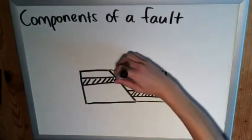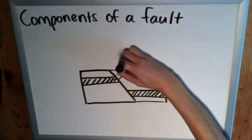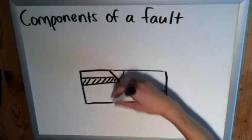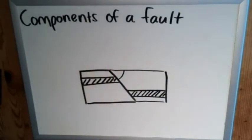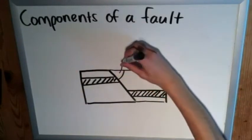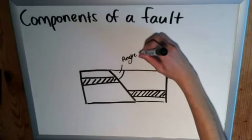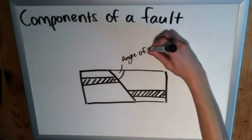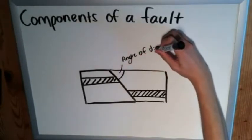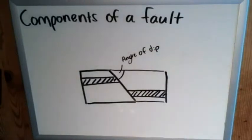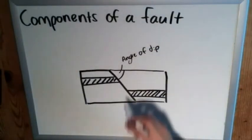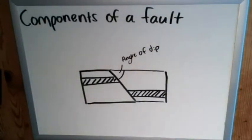So one of the first components we can talk about is this right here. It's always the upper angle, the upper left angle on the hanging wall or the upper right if it's facing the other way in the footwall. But this right here is called the angle of dip. And dip is a concept that we use a lot in geology and you'll see it in multiple instances. But just pertaining to faults here, this is our angle of dip.